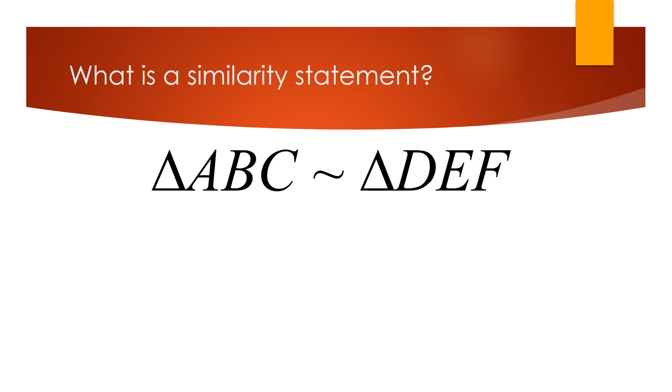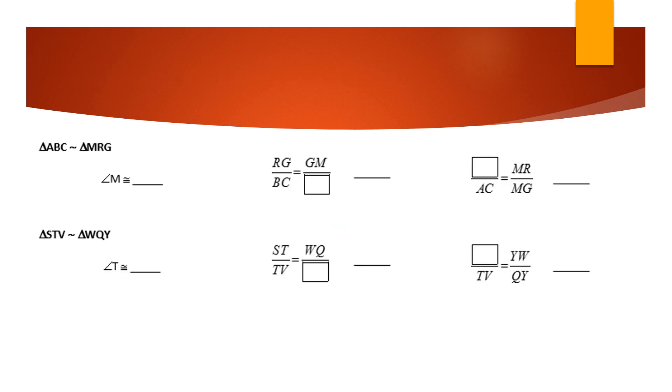A similarity statement is very similar to a congruent statement. It's just using that similar symbol instead of the congruent symbol. So when you see that squiggle, that means similar. It's telling you the proportional sides and the congruent angles. So just like when we know angle A is congruent to angle D, we know side AB is proportional to side DE. So if we use that similarity statement to fill these in.